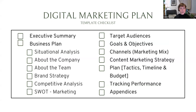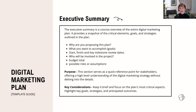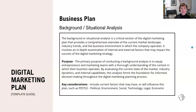This is your checklist — the sections recommended in your digital marketing plan. First is the executive summary, which is really a summary of everything — do it at the end. Put down initial notes throughout, but finish it last. It should cover why you're doing this plan, what you want to accomplish, key milestones, review dates, who's part of the project, your total budget, and possible risks and assumptions.